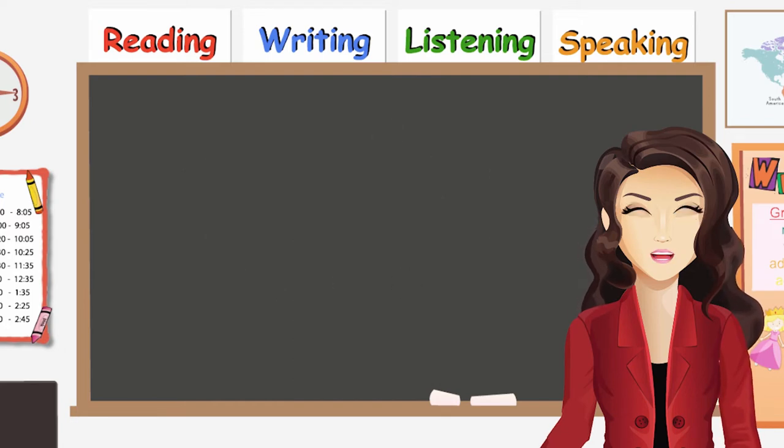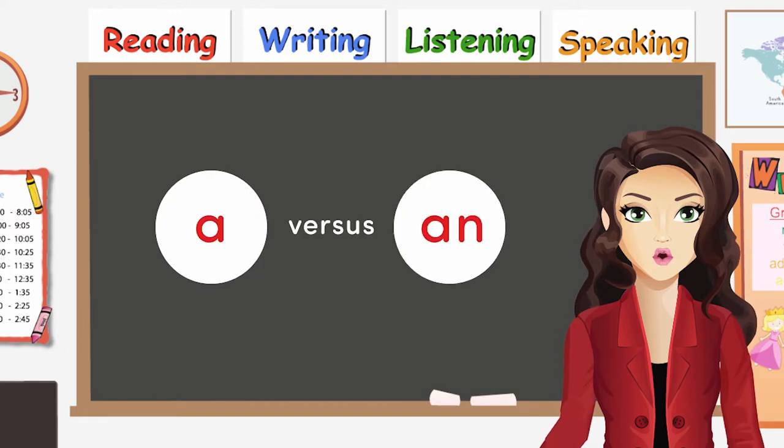Next, let's look at articles A and AN. Both A and AN are used before a noun. Let's have a look.